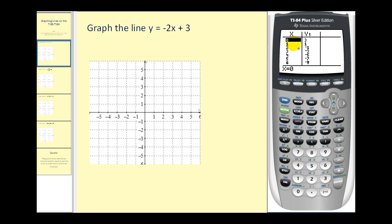And now we can scroll up and down this t-table to find the coordinates of an infinite number of points that would be on this line. So here's the point zero three, then there's the point one one, two, negative one, and so on.